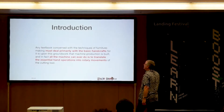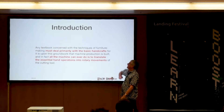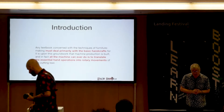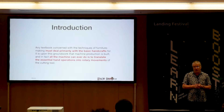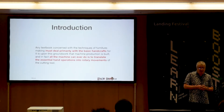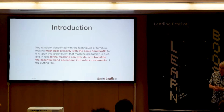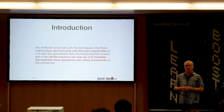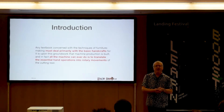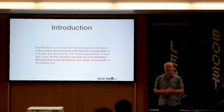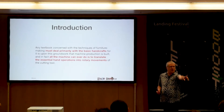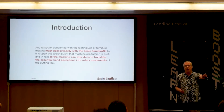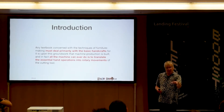In the introduction of this book it says: 'Any textbook concerned with the techniques of furniture making must deal primarily with the basic handicrafts, for it is upon this groundwork that machine production is built. All the machine can ever do is translate the essential hand operations into rotary movements of the cutting tool.' In other words, even if you are using machines to make your furniture — or machines to make your websites, like React, jQuery, Angular — you still need to know the basics.